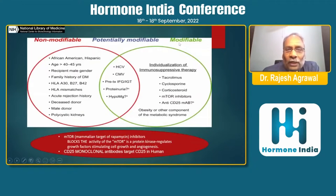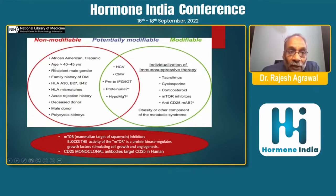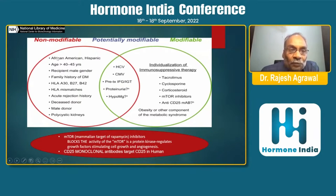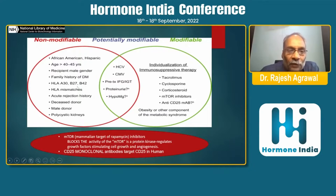There are various non-modifiable and modifiable risk factors. Non-modifiable risk factors include age of the recipient as well as the donor — both are very important. Male sex in both recipient and donor, and older age, increase the incidence of NODAT. African Americans, Hispanics, HLA mismatch, polycystic kidneys, and various genetic alleles are also non-modifiable risk factors.